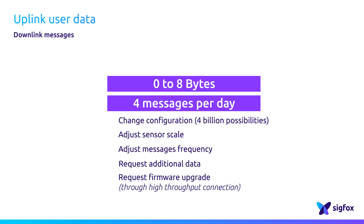You can also use the downlink channel to request additional data for an event that has been sent by the device, or request a firmware upgrade. Of course, the firmware is far bigger than 8 bytes of data, so you would ask the object to use a more powerful solution like a GSM modem to download the firmware at the right time, instead of using a polling mechanism through the GSM link.